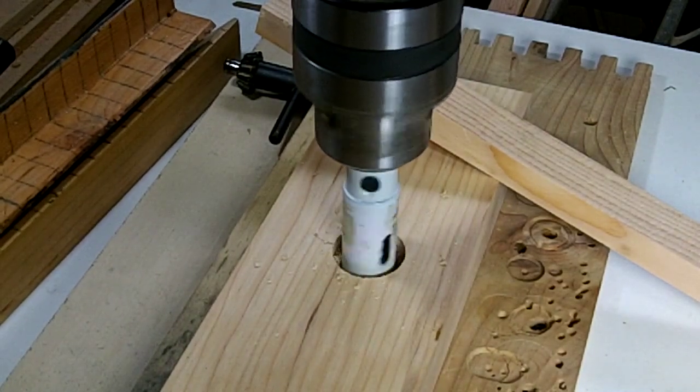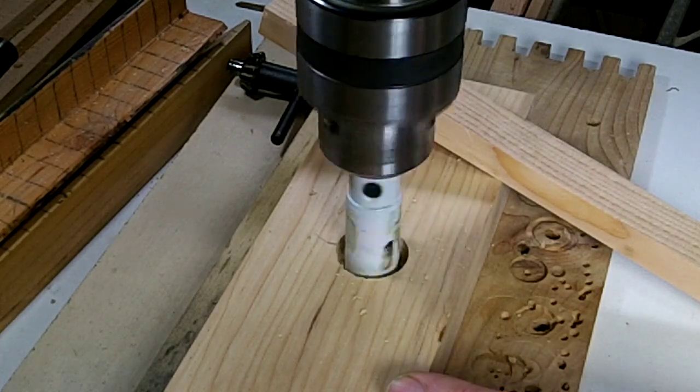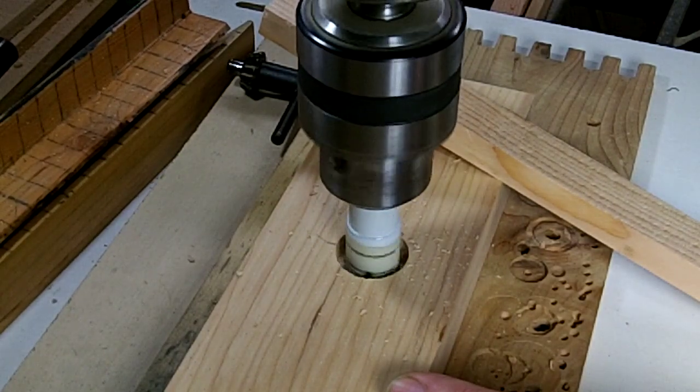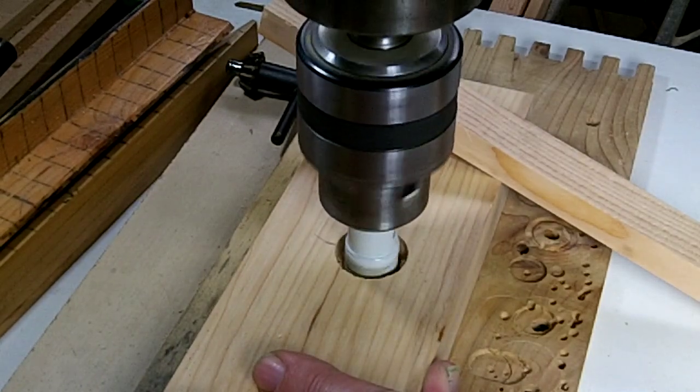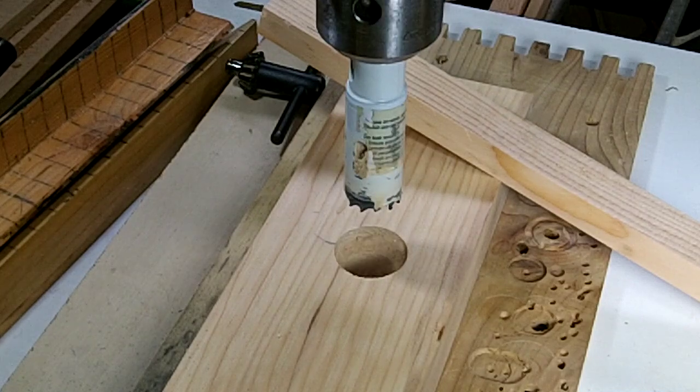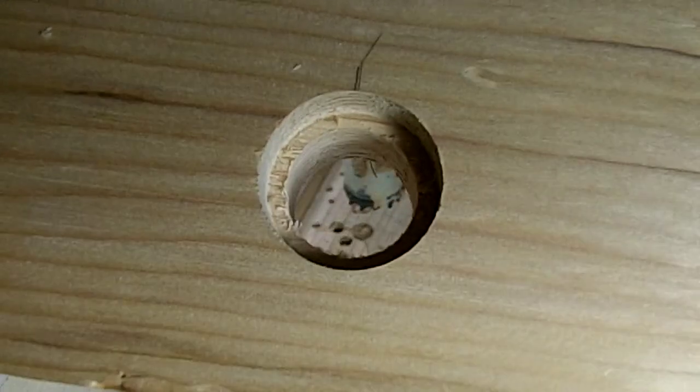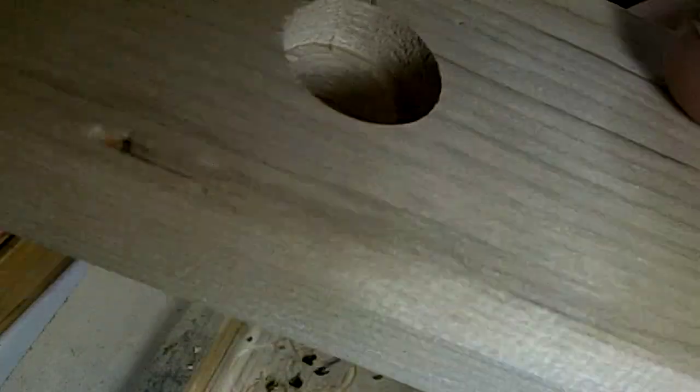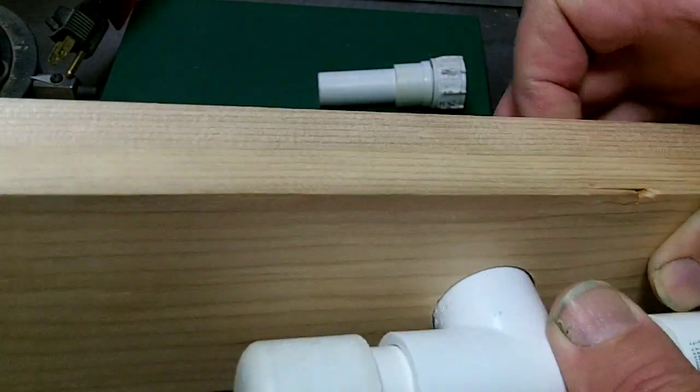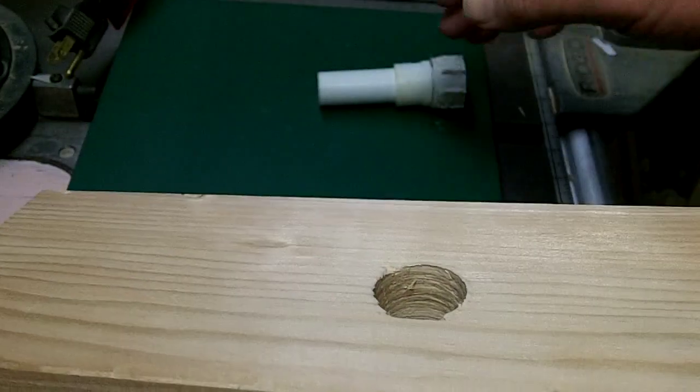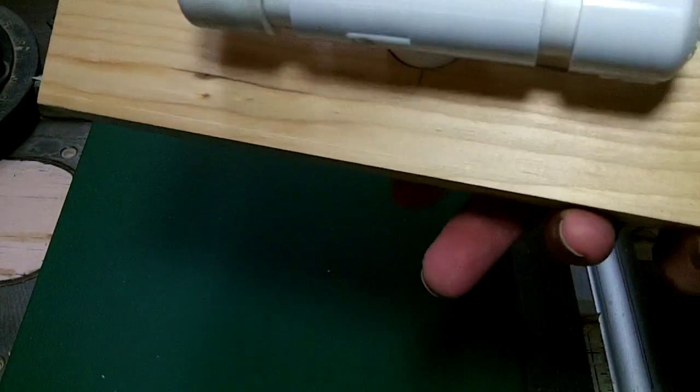I use a one and one-sixteenth inch Forstner bit to drill about halfway through the board. This will be for the tee fitting. I swap out the bits and put a quarter inch bit in and drill a pilot hole for the hole saw. You can drill just one hole that will fit the tee and call it good.